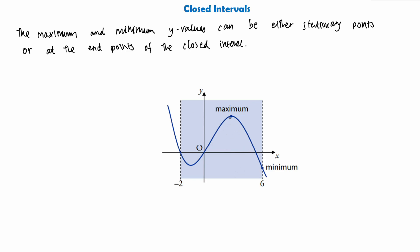So the minimum y value is going to be the smallest y point on this curve between these two lines. And we can see it's right here at the end. So instead of being down here at this minimum stationary point, it's at the end point of the graph because it's smaller — it's lower down than the turning point. So as you can see, sometimes the maximum and minimum y values will be either at stationary points or at the end points of the closed interval.